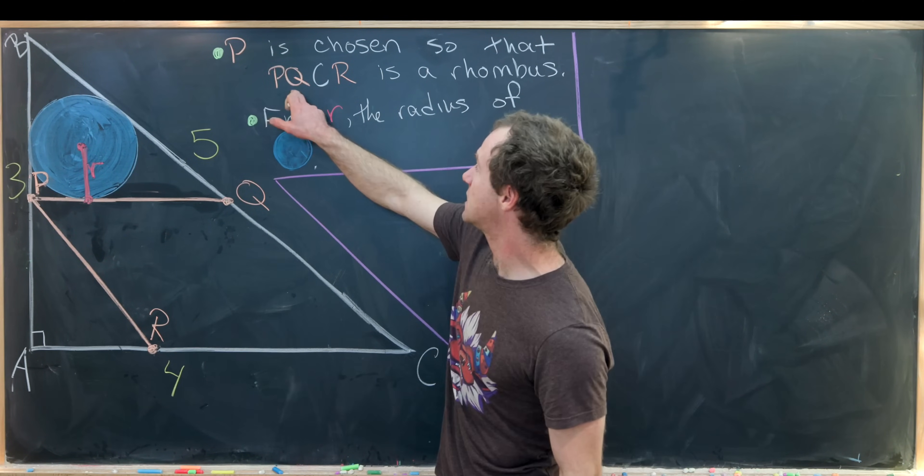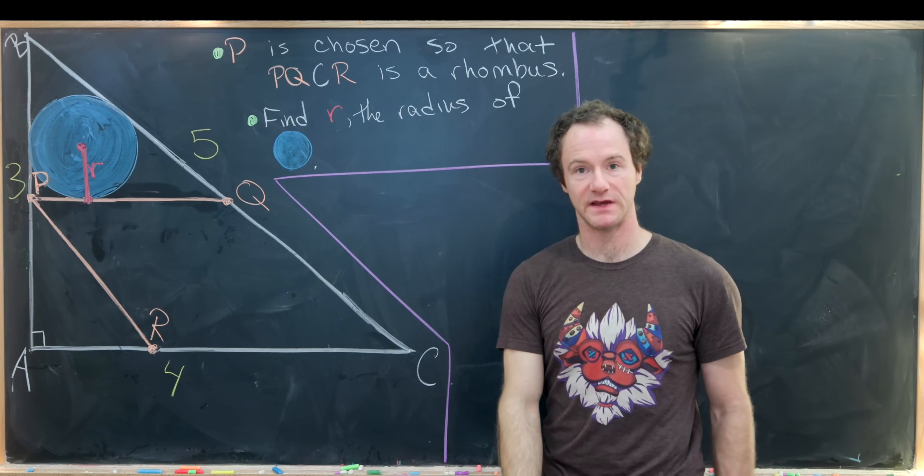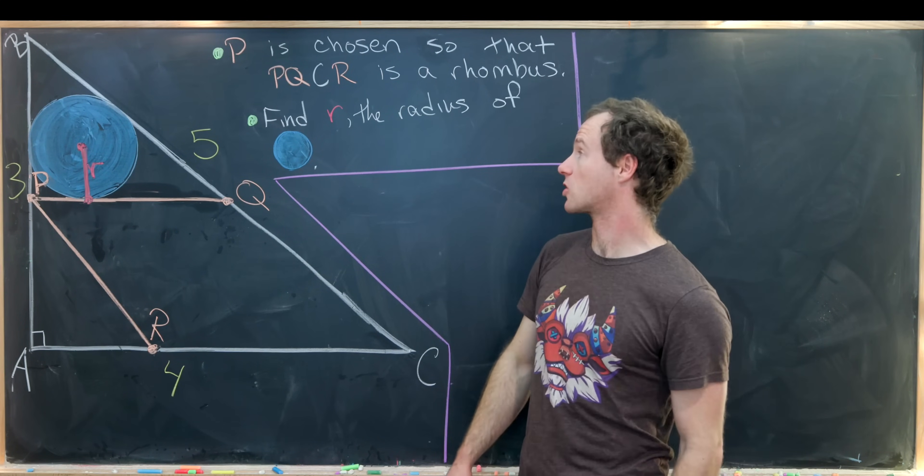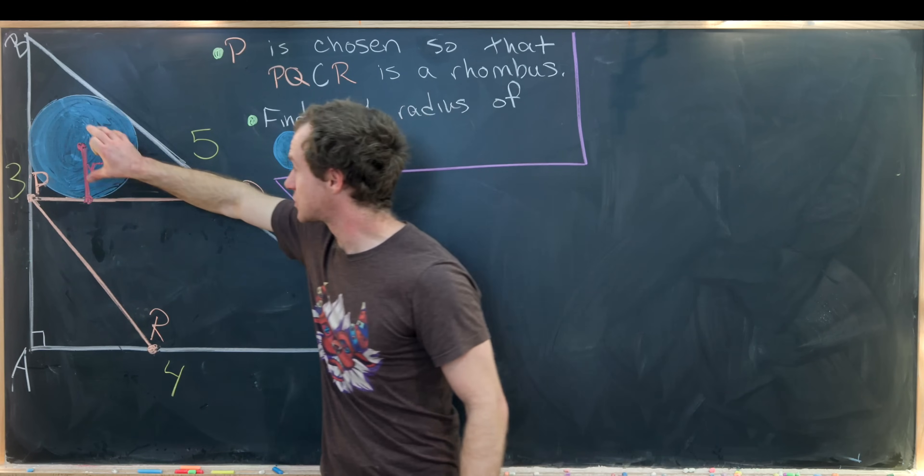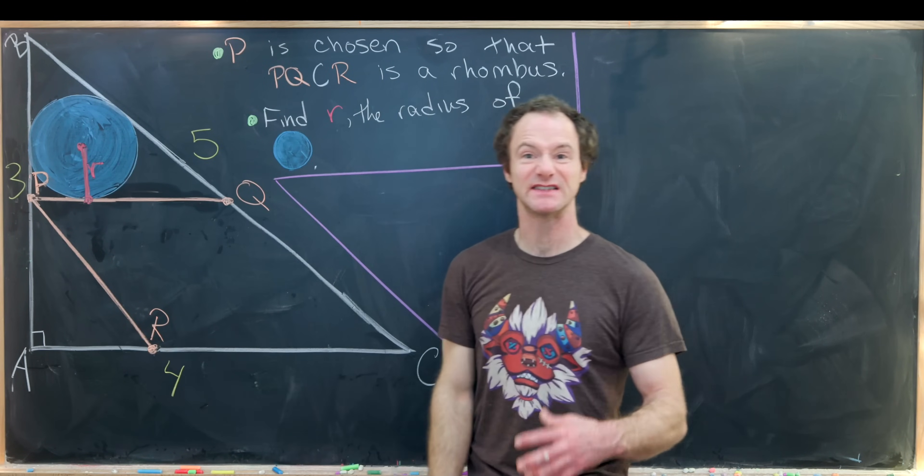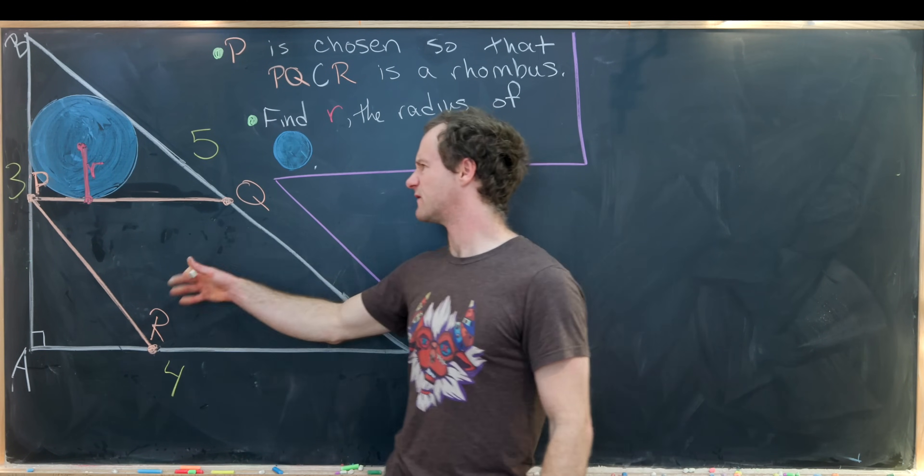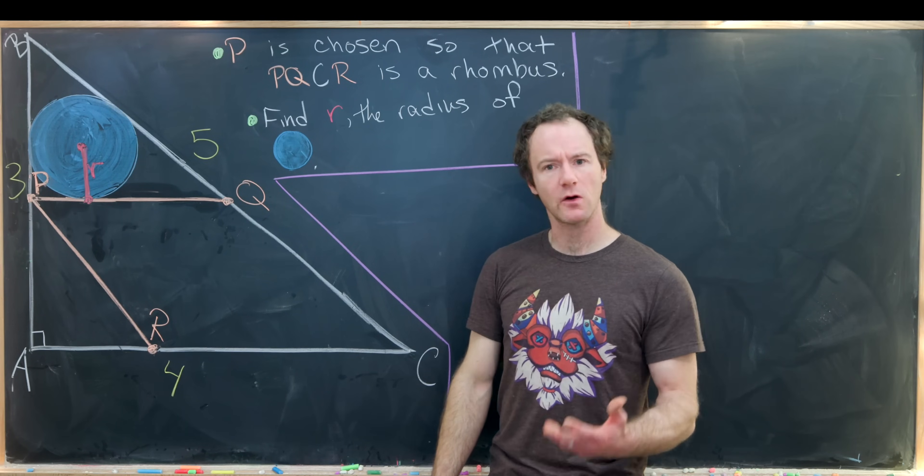So just to be clear, PQCR is a rhombus. Then our goal is to find the radius of this blue circle, which is inscribed in this upper triangle, which kind of lives on top of the rhombus.